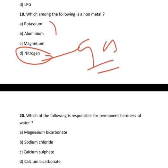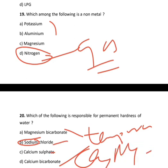Which of the following is responsible for permanent hardness of water? For temporary hardness, magnesium and calcium bicarbonate are responsible. For permanent hardness, magnesium and calcium sulfate and chloride are responsible. There is sodium chloride in the options but I'm talking about calcium and magnesium. If it's chloride and sulfate, it's permanent hardness. If magnesium and calcium are bicarbonate, it's temporary hardness. The correct option is calcium sulfate.